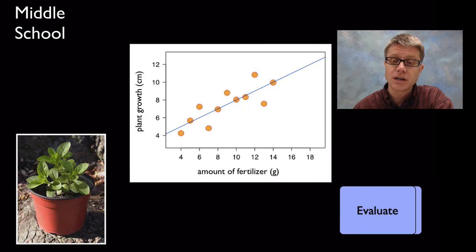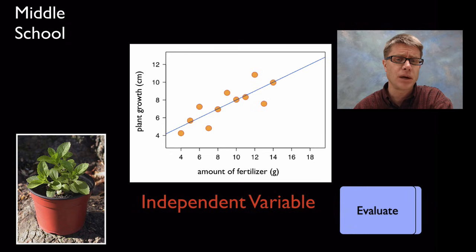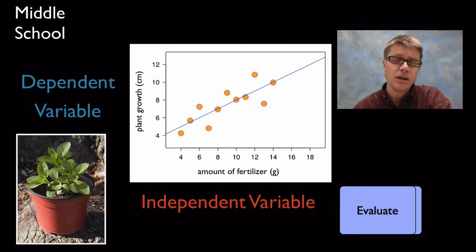As you move from middle school into high school you want to make sure they understand the difference between an independent and a dependent variable. Independent variable is going to be the thing that you change in an experiment. Dependent variable is going to be what changes as a result of that.